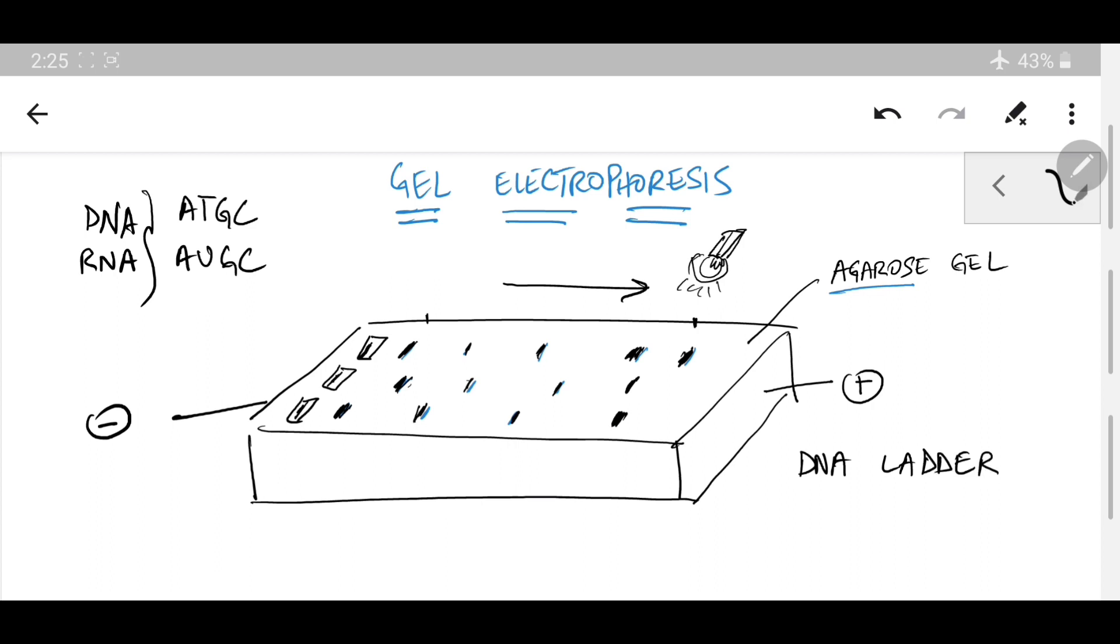And after some time, you are able to compare how much your specimen has traveled or how many base pair fragments you've got as compared to the DNA ladder. And from there on, you could estimate what is primarily in your sample.